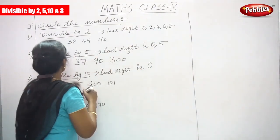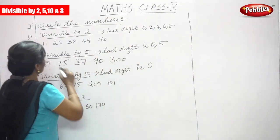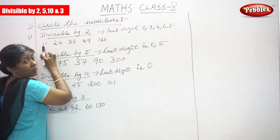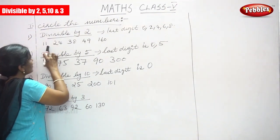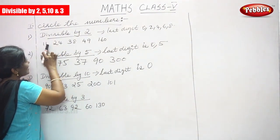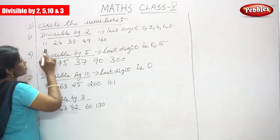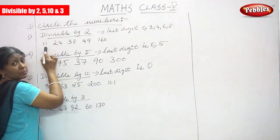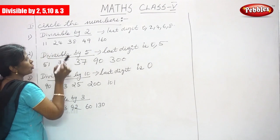First number is 11. The last digit ends with 1, so it is not divisible by 2.